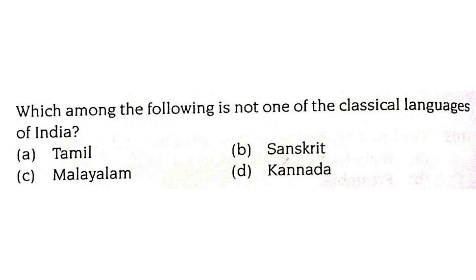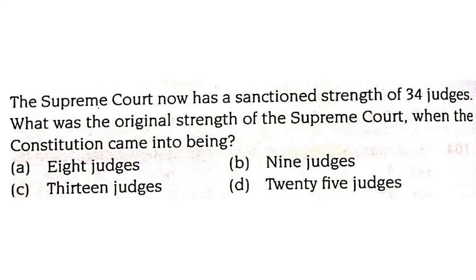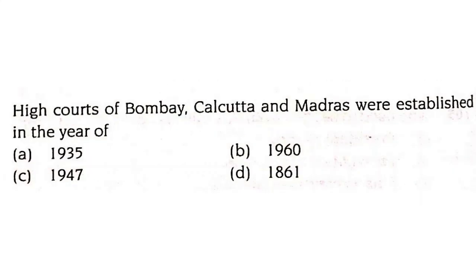Which among the following is not one of the classical languages of India — Tamil, Sanskrit, Malayalam, or Kannada? Malayalam is not one of the classical languages of India. The Supreme Court now has a sanctioned strength of 34 judges; its original strength when the constitution came into being was eight judges including the Chief Justice. High Courts of Bombay, Kolkata, and Madras were established in the year 1861.